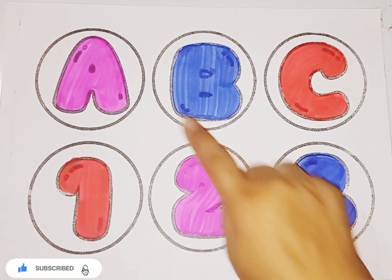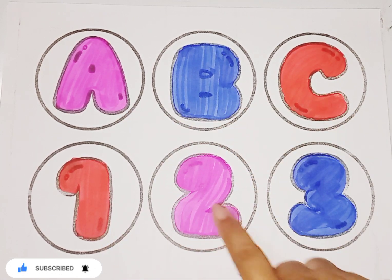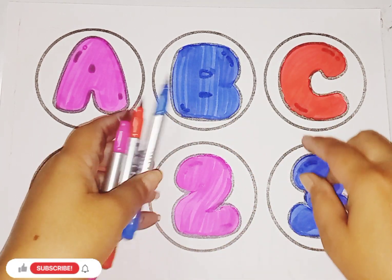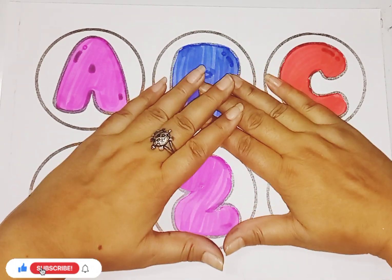So kids, today we learned alphabets and numbers. Alphabet A, B, C and number 1, 2, 3. I hope you liked the video. If you liked the video, please like and subscribe my channel. See you next video, bye bye.